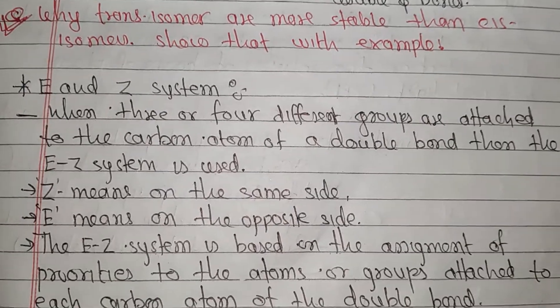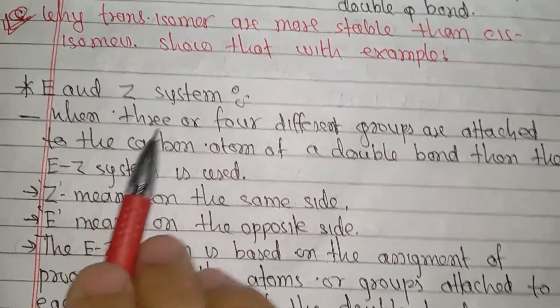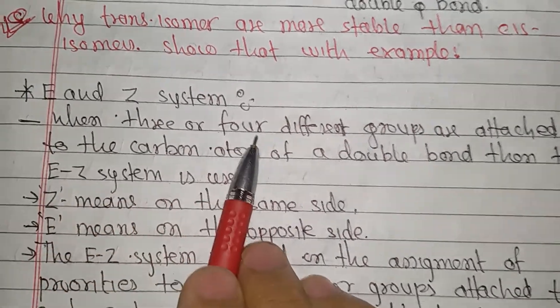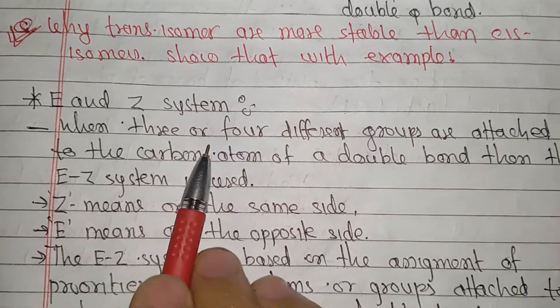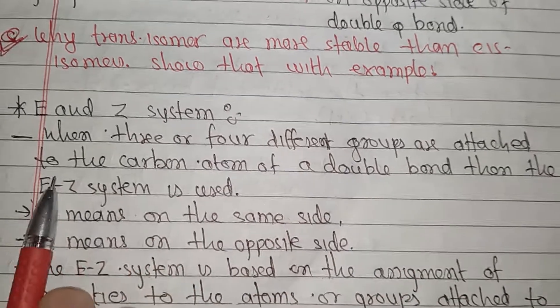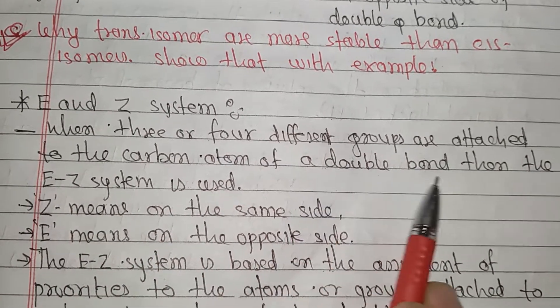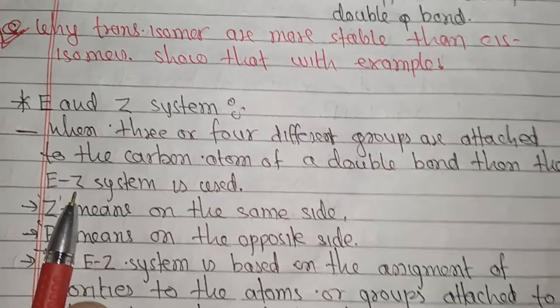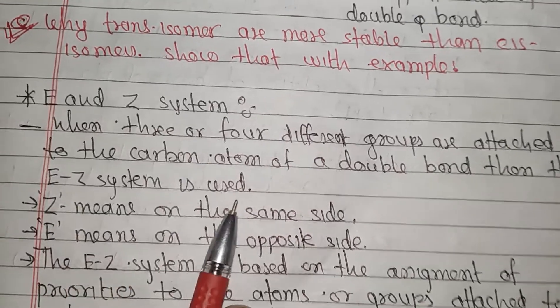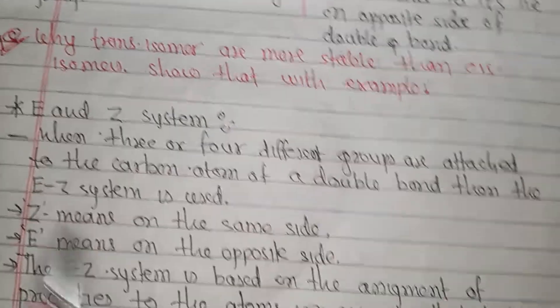When three or four different groups are attached to the carbon atom of the double bond, then the E/Z system is used.